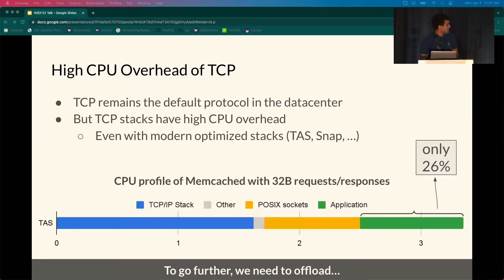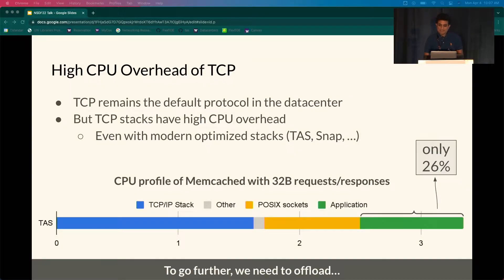Here's an example on this slide. We profile a Memcached server running with the TAS kernel bypass TCP stack with a workload that consists of 32-byte keys and values. As you can see, TAS still has significant overheads, and only 26% of the per-request CPU cycles are spent within Memcached.